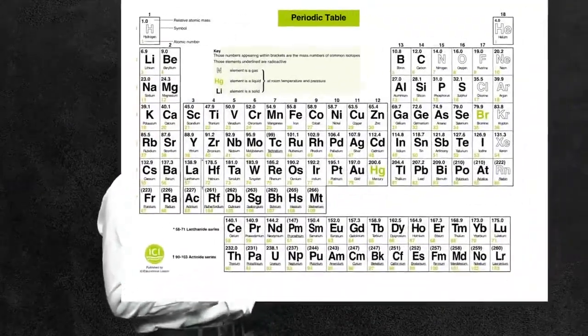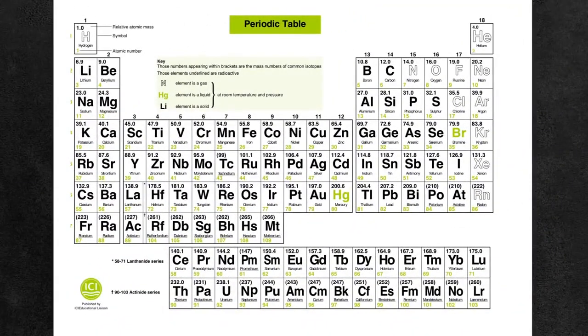In chemistry, we identify elements with symbols that are organized in the periodic table, right here. So these symbols can be thought of as the alphabet of a language. Elements can combine with each other to form a compound, which can be thought of as a word. Just as many words form a sentence, many compounds can form living organisms.